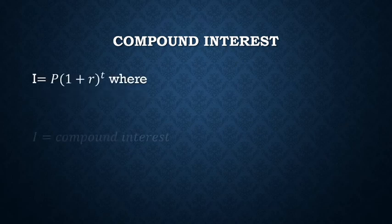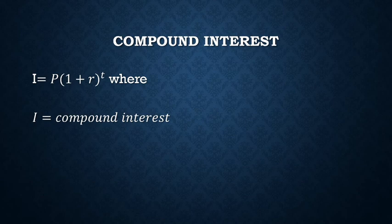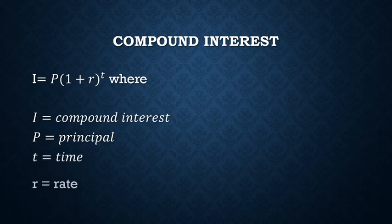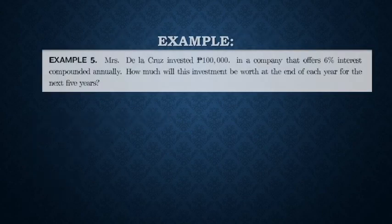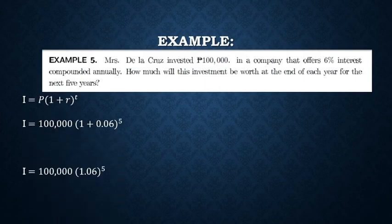Compound interest — the interest compounds, meaning the principal earns interest, and then that interest earns interest again. The new amount becomes the new principal. This is used in banks and loans, and the process is called compounding.